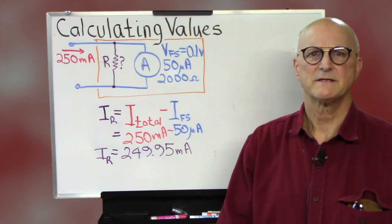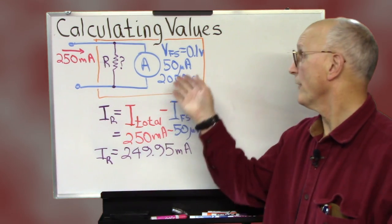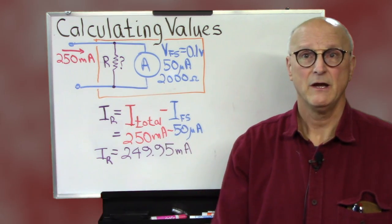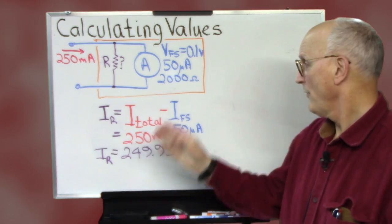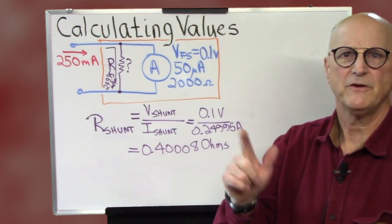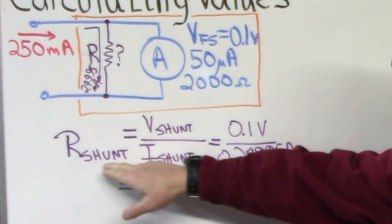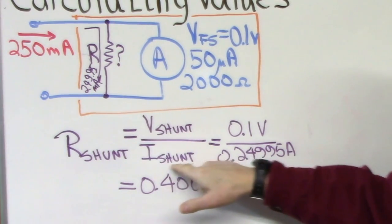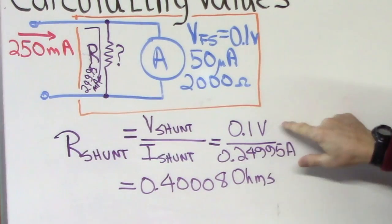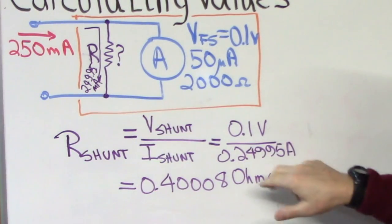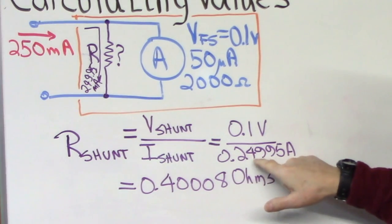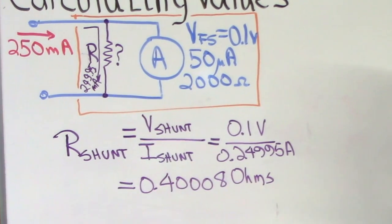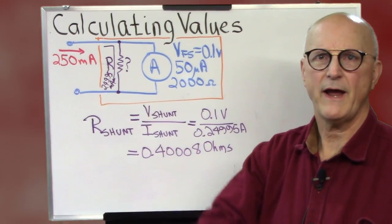The shunt resistor has 0.1 volts across it just like the 50 microamp meter movement. And so now we can calculate the value that this resistor has to be when it has 0.1 volts across it with this amount of current through it. And so the value of this resistor, the shunt resistor is equal to the voltage across the shunt resistor divided by the current in the shunt resistor. We already know that's 0.1 volts across the shunt resistor. We've calculated the current through it as 0.24995 amps. And that gives us a shunt resistor value of 0.4008 ohms.